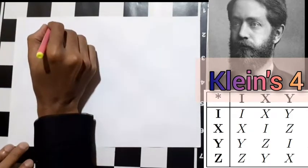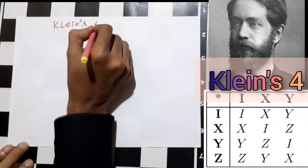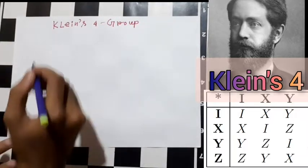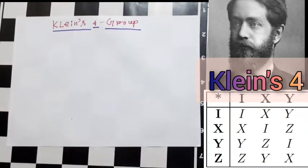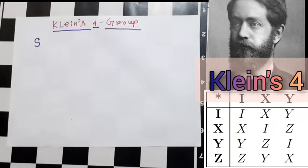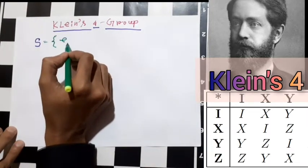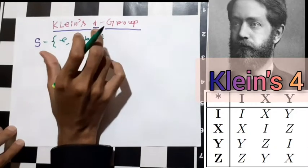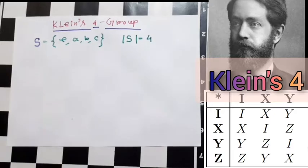So our topic today is the Klein Four-Group. The word 'four' is very important here. What Felix Klein did is he created a beautiful construction. Let's talk about an ordinary set — we need to form a group. He took this set and put in the elements: e, a, b, and c. So the set is {e, a, b, c}, and the cardinality of this set is exactly four. He then defines some relations.